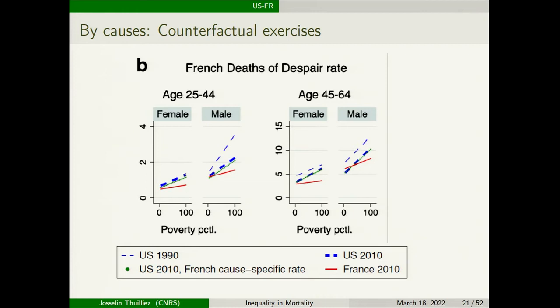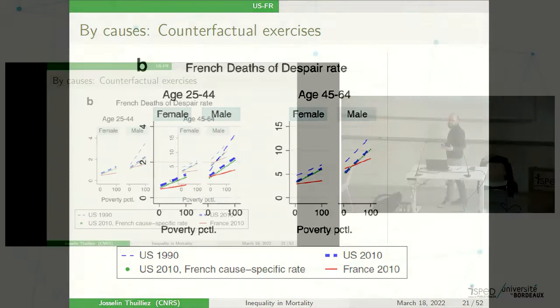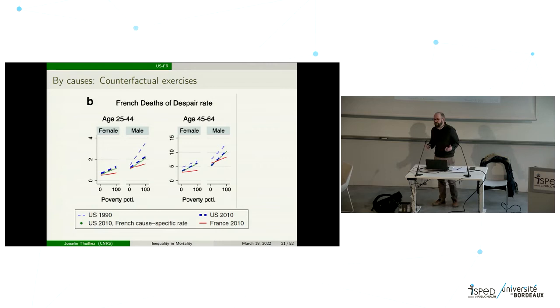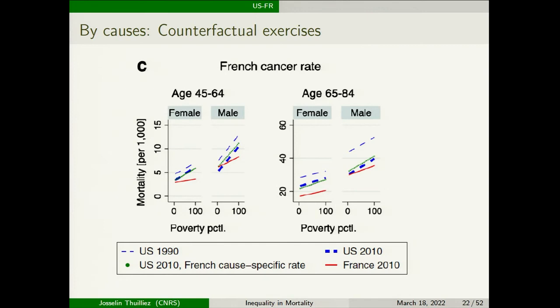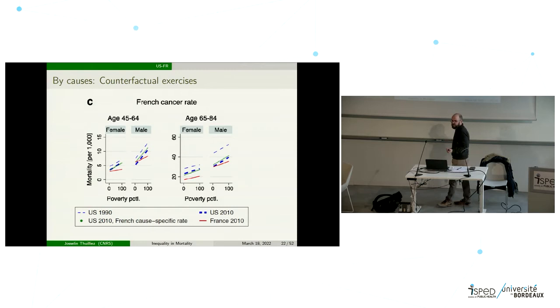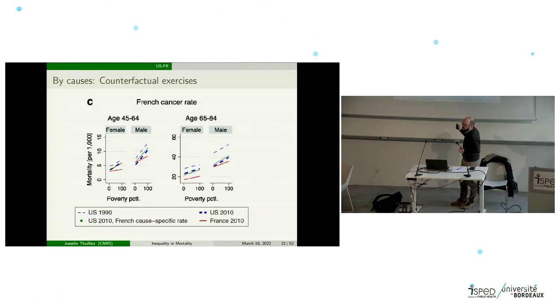For deaths of despair, which have been very emphasized in the US, we don't find any particular gain when applying the French rate — probably deaths of despair matter, but not as much, because we don't have this kind of epidemic in France and the US rates remain relatively stable when applying the French rate. For cancer, the contrary is true: France seems to perform much worse than the US — when you apply the cancer-specific rate to US general mortality, the line increases for the male population, meaning the US has been performing much better than France in terms of cancer management.